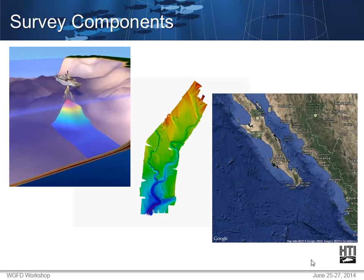When you're considering a bathymetry survey, there are three main components. One is the survey gear and equipment you're using. The other is the location you'll be surveying in — this is just a more zoomed-out shot of Baja. And then also the data you're collecting: what you're doing with it, how you're sorting it, how you're storing it, and then after you've collected it, what sort of processing techniques you're using.